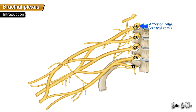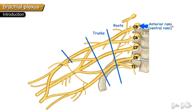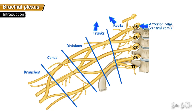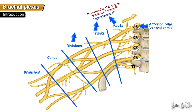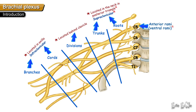The brachial plexus consists of the following parts: roots, trunks, divisions, cords, and branches. The roots and trunks are located in the posterior triangle of the neck — they are supraclavicular. The divisions are located behind the clavicle. The cords and branches are located in the axilla, so they are infraclavicular.